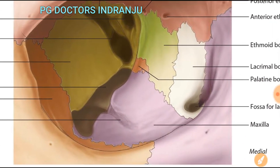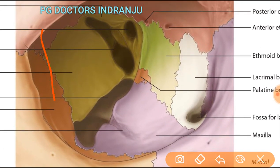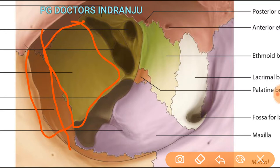The lateral wall is formed by the anterior surface of the greater wing of the sphenoid bone, and the orbital surface of the frontal process of the zygomatic bone. So the lateral wall is formed by the anterior surface of the greater wing of the sphenoid bone and the orbital surface of the frontal process of the zygomatic bone.